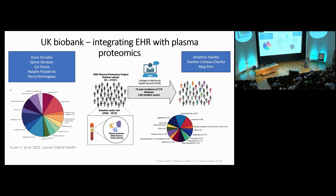The UK Biobank study is uniquely well suited for two main reasons. First, thanks to the Pharma Proteomics Project, there are plasma protein measurements for around 3,000 proteins taken from samples at the baseline study visit. Second, all participants were linked into electronic health records, which allows us to develop refined disease definitions across a range of different clinical specialties.